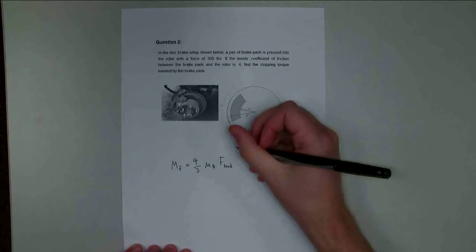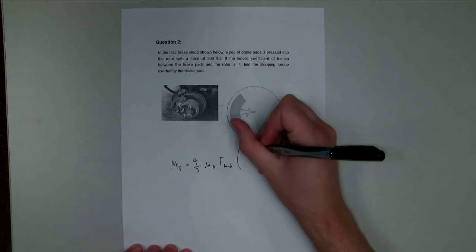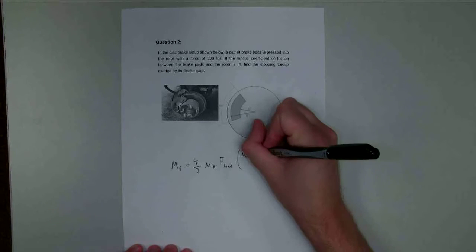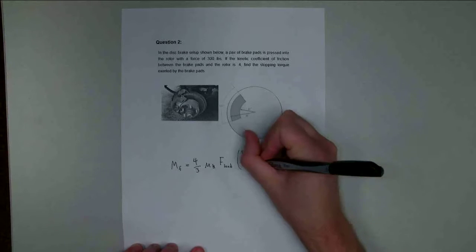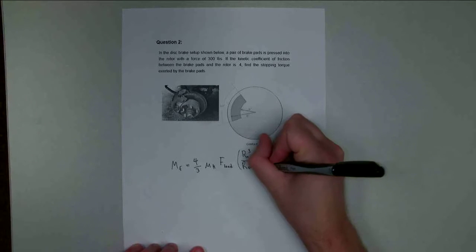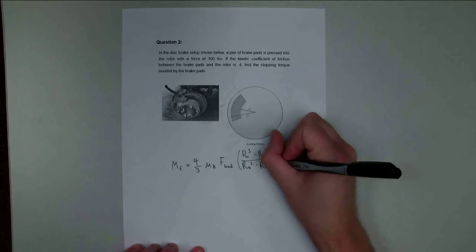Times r outer cubed minus r inner cubed, over r outer squared minus r inner squared.